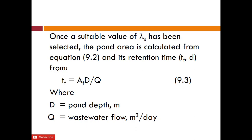Once we have a suitable value of λs, the pond area can be calculated from the retention time equation. The retention time equals AF × D over Q, where D is the depth of the pond — around 2 meters — and Q is the flow.